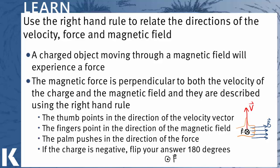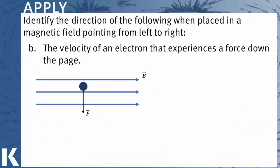Let's see a few more examples of applying the right-hand rule. Now we want to find the velocity of an electron that experiences a force down the page. So in this case, we have F and B, and we're looking for V.